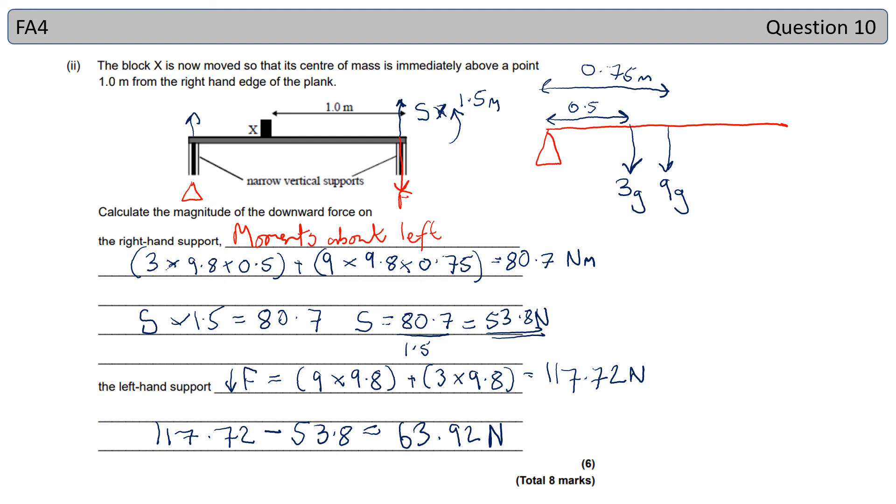And for these ones here, we would round them up likely to two sig figs. So that would be 54. And this would be 64.